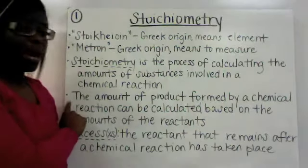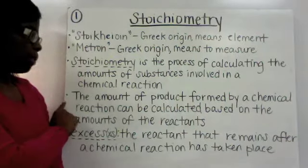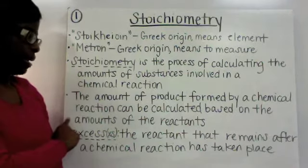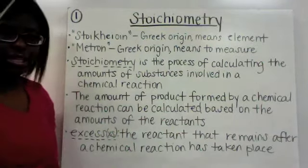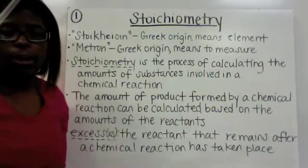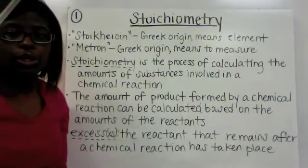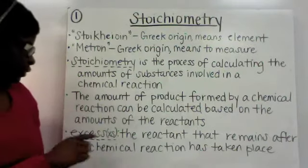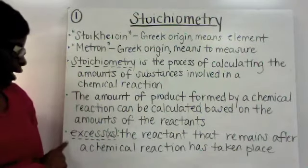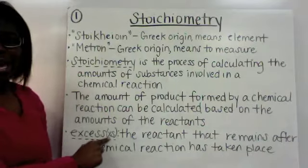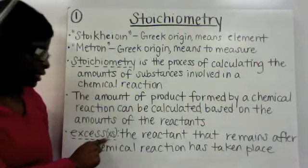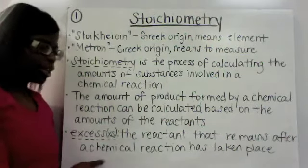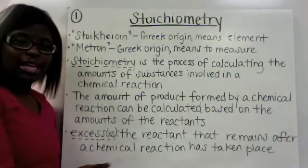The amount of product formed by a chemical reaction can be calculated based on the amounts of the reactants. So you can solve a stoichiometry problem using the reactants that you have present. Your excess, which is represented by XS, is the reactant that remains after a chemical reaction has taken place.